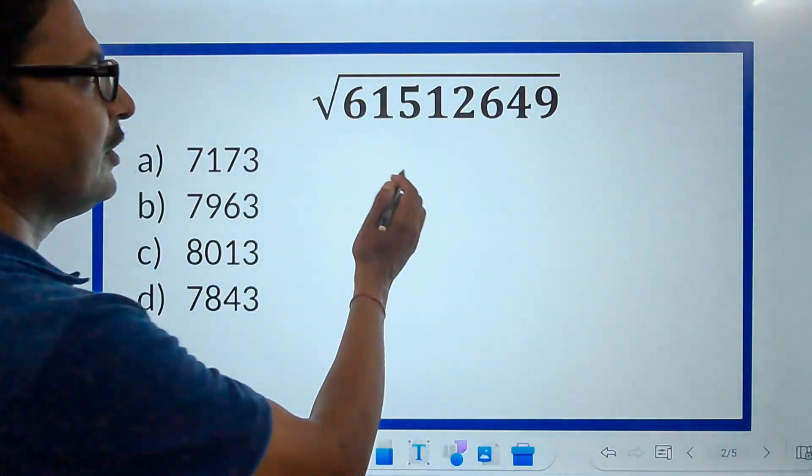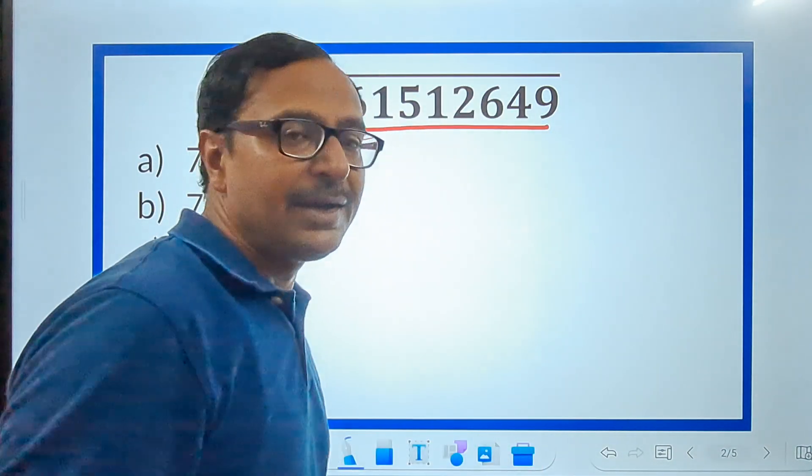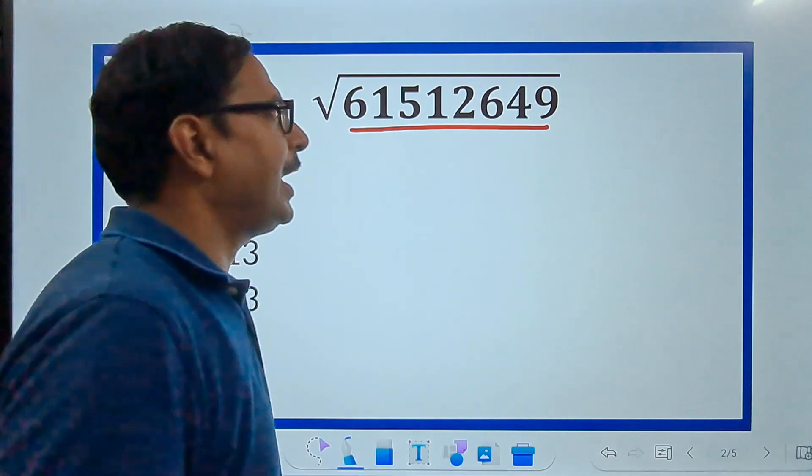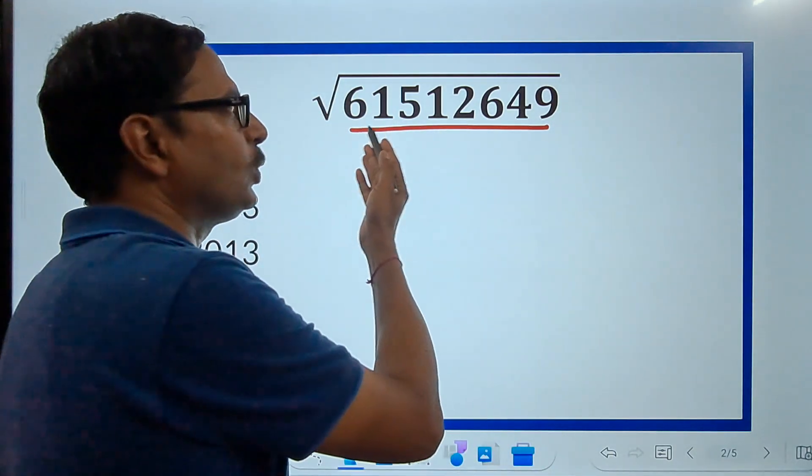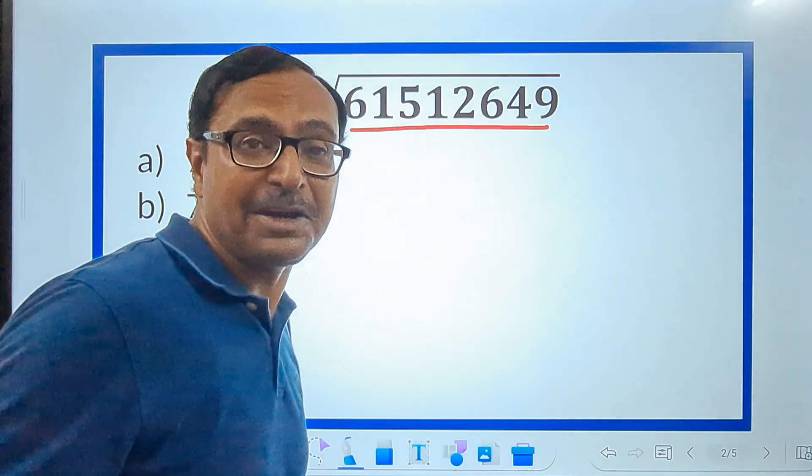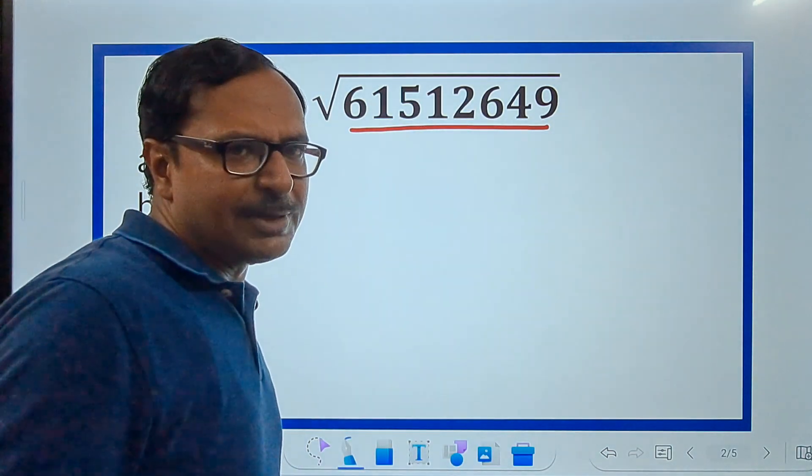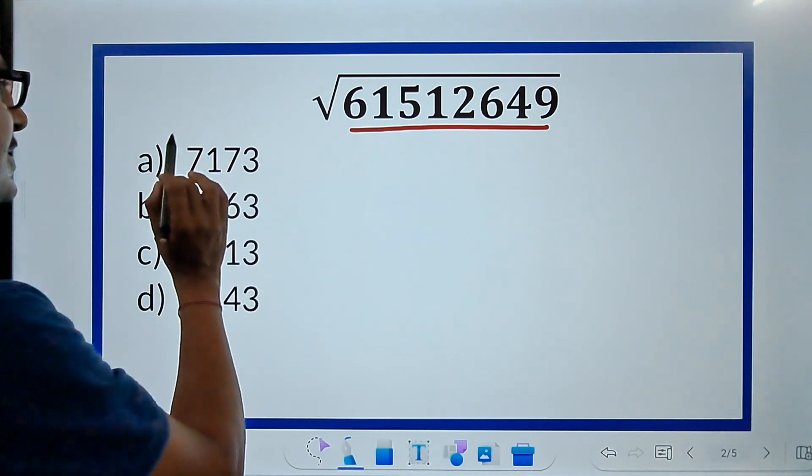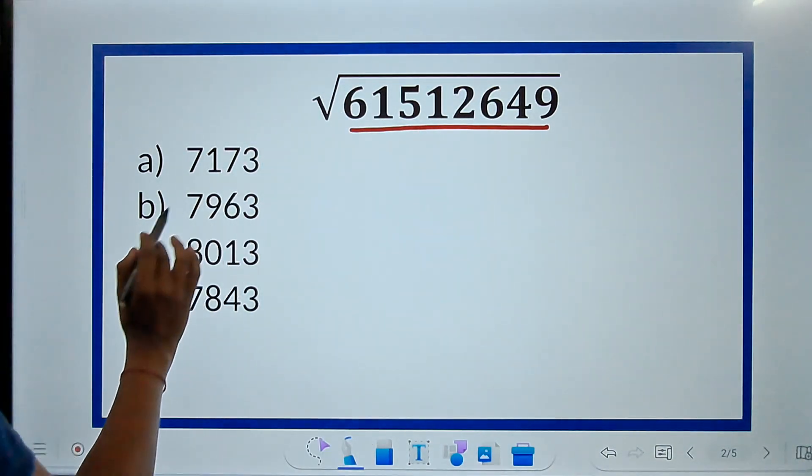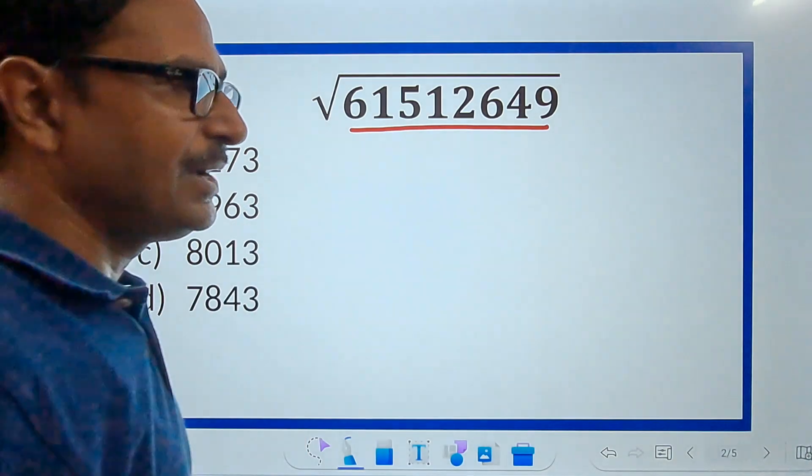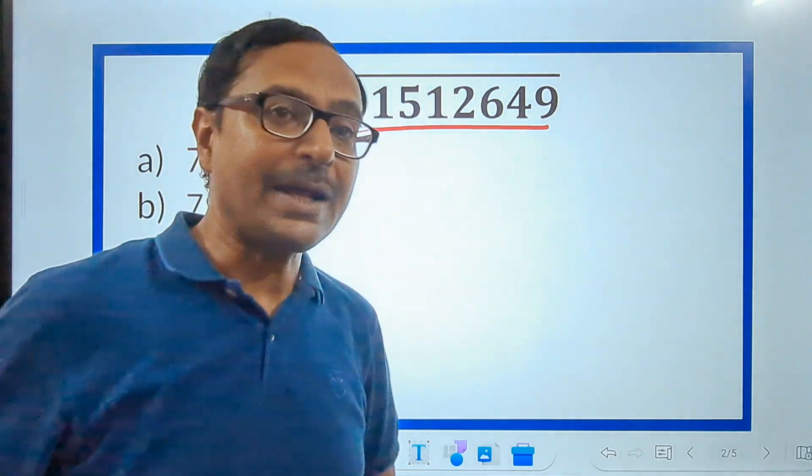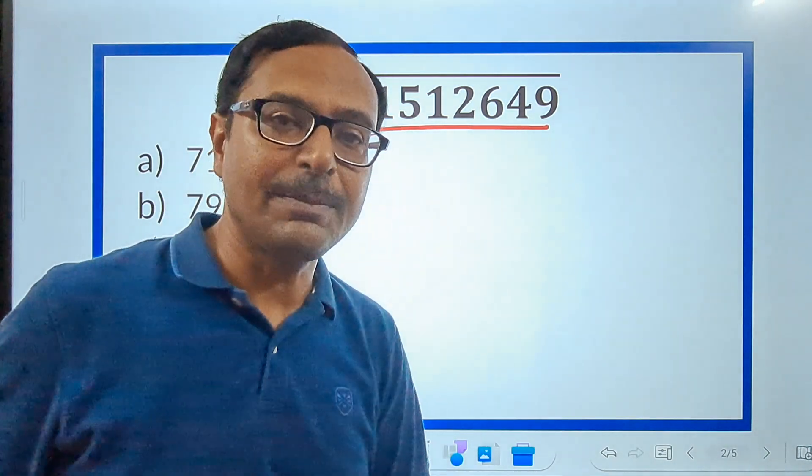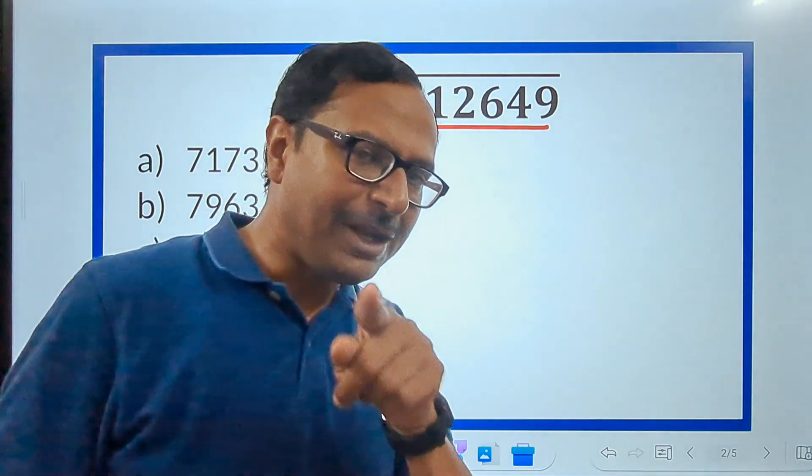Let's take an example where we have to find the square root of 61512649. Is there a method which you know? I don't think so. Till now, even I knew the long division method, I knew the prime factorization method. I don't have guts to make factors of such a huge number and long division method is going to consume a lot of time. I want to crack this multiple choice question.